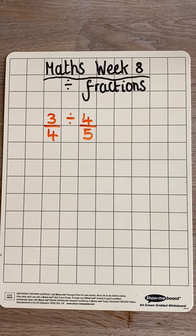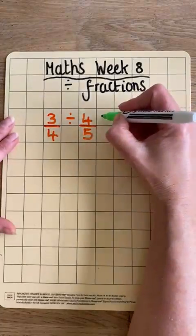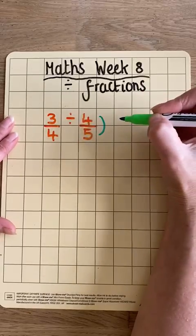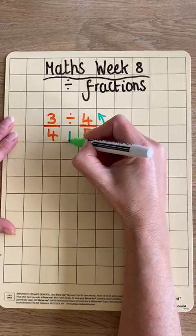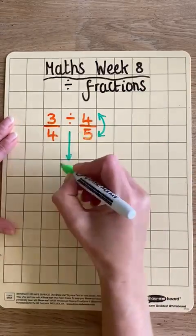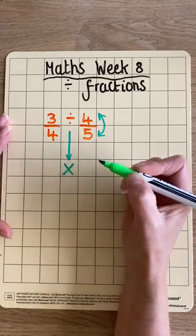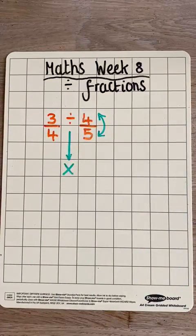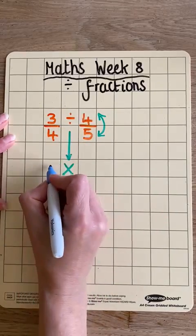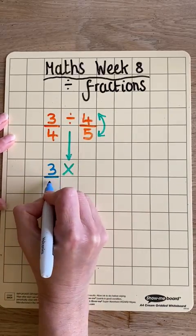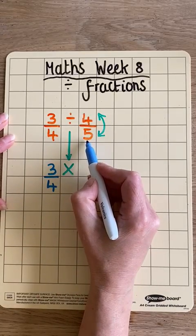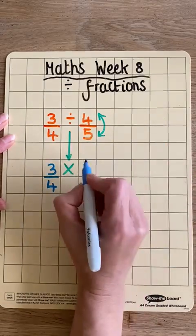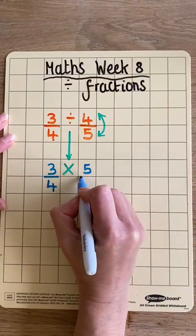Now, to divide a fraction, we first have to change the sum. We do that by turning the second fraction upside down, and then changing the divide to a multiply. Then we rewrite our sum. The first fraction stays the same, then we have our multiply, and remember the second fraction has turned upside down, so it's now 5 quarters.